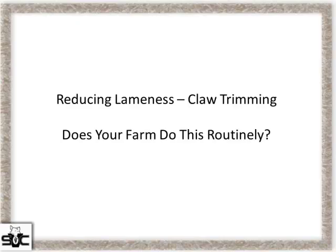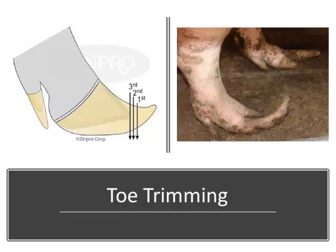Another thing I wanted to spend a little time on is claw trimming — ways that we prevent or reduce the number of lame sows in our sow herds. This is one we're generally pretty poor at day to day. The trimmer has sat on the med room wall for the last five years and really hasn't gotten used. It's hard to get into a crate to trim that toe. But we do know that long toes and long dew claws lead to further foot lesions, inflammation, and lameness.